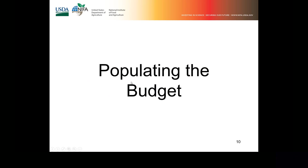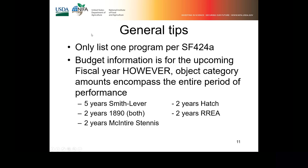When populating the budget, the 424A — list only one program per SF-424A. The budget information is for the upcoming fiscal year; however, the object category amounts encompass the entire period of performance. That's five years for Smith-Lever and two years for the remaining programs.